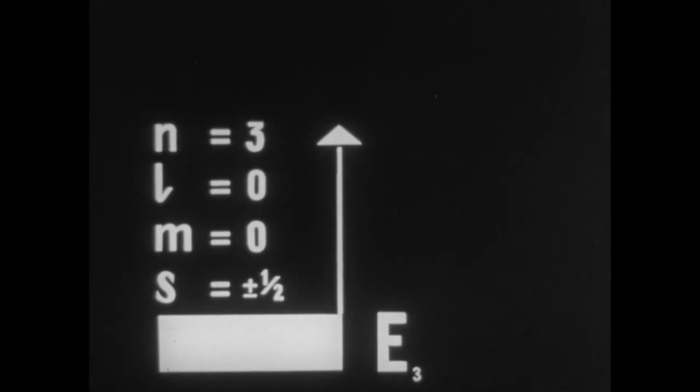Since N determines the average distance of the electron from the nucleus, all electrons with the same N are called an electron shell and are denoted by specific letters.